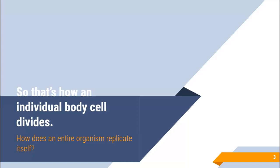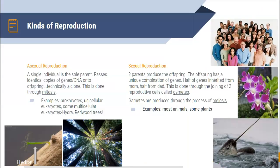If that's how body cells reproduce, how does a whole organism reproduce? That's how my lung can replicate itself, but is that how I replicate myself? The answer for humans is no. There are two different kinds of reproduction: asexual and sexual reproduction. Sexual reproduction is what we do as humans, where two parents make the offspring — the offspring gets half of the DNA from mom and half from dad. But there is another type called asexual reproduction, where there's just one individual and you are the parent, so you make a little clone of yourself.